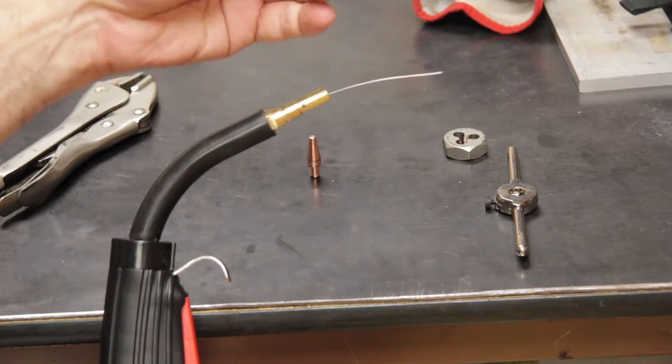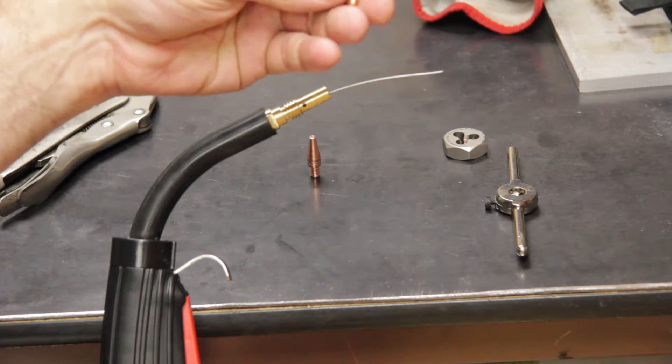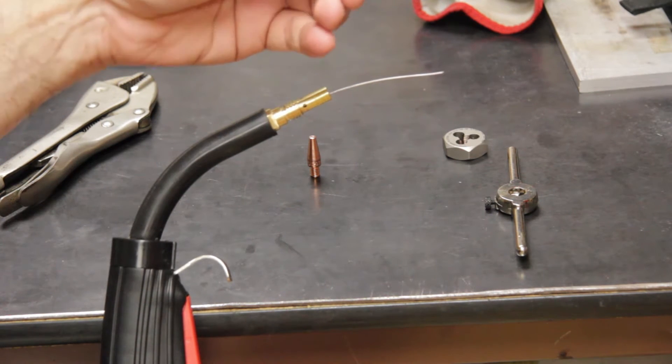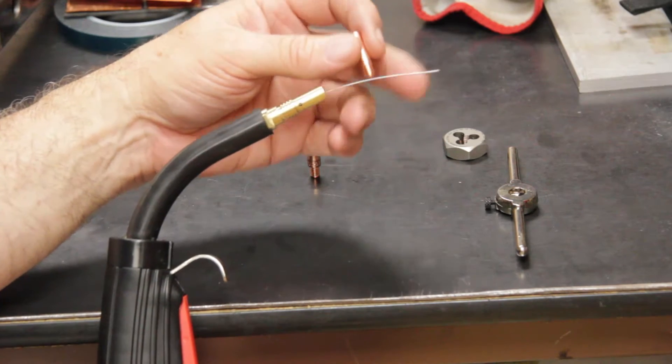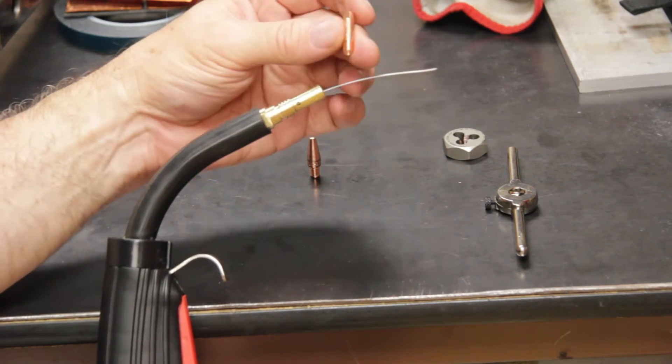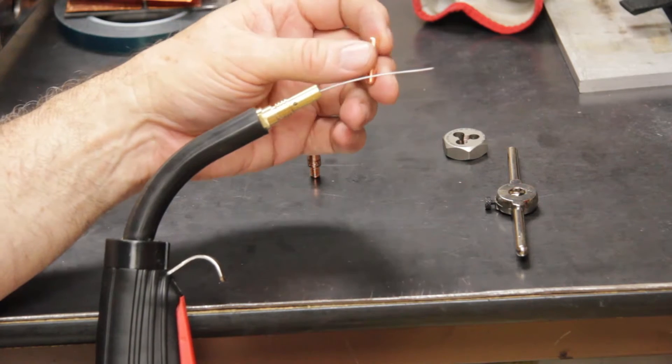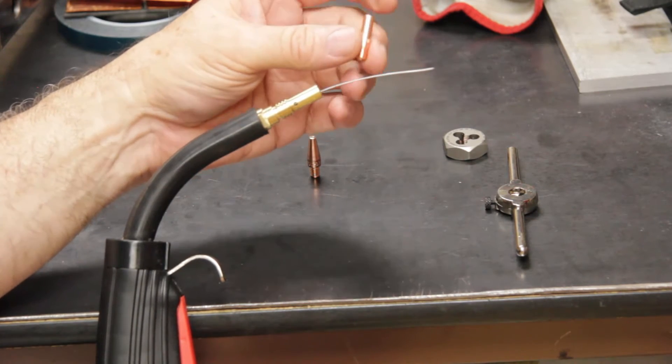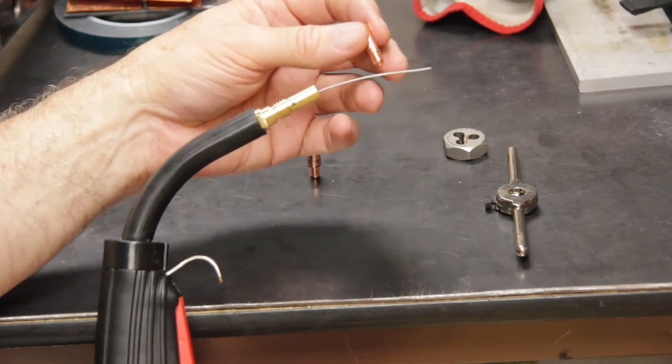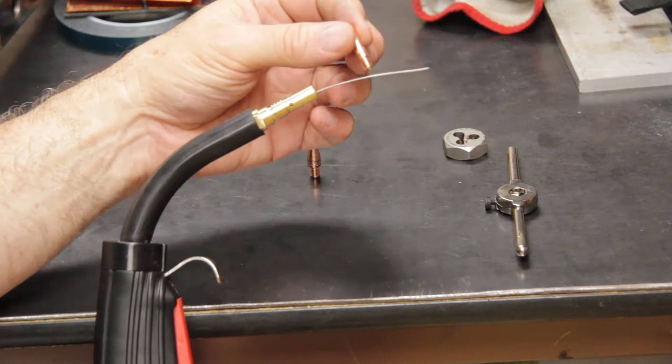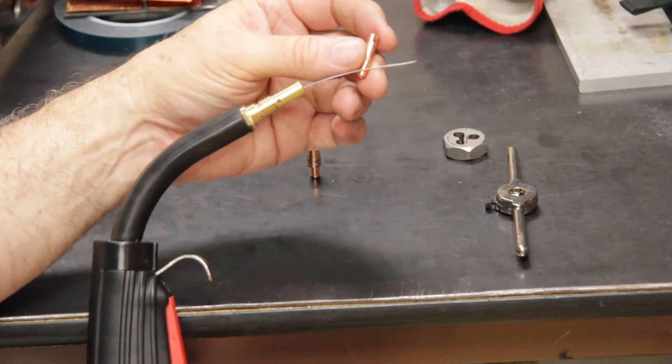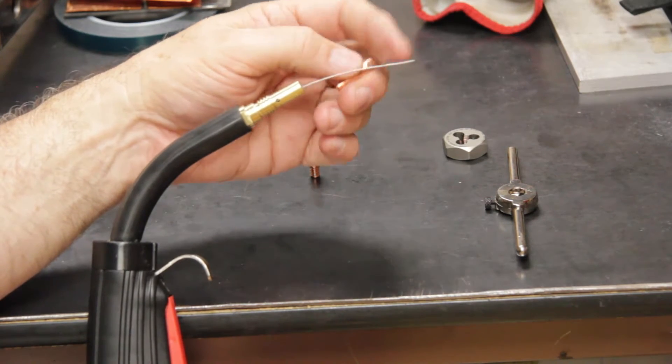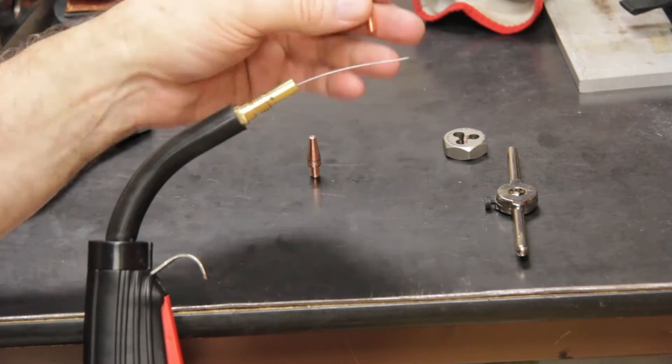My old Lincoln welder uses this style which is an untapered tip. And I picked these up at either Harbor Freight Tools or Home Depot. And at Harbor Freight I can get the 035 wire size contact tips for $7.99 for a pack of 10. Or I can get the 030 wire size for $9.99 for a pack of 10.